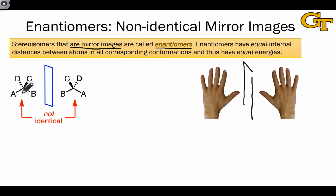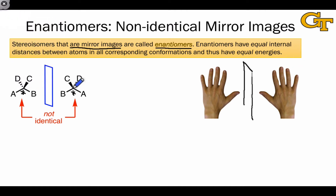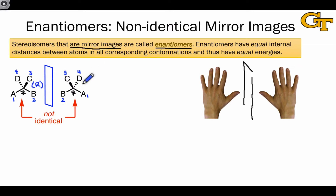Molecules that differ only with respect to the configuration of a single tetrahedral stereocenter, here represented as the central carbon, are also enantiomers. Reflection through the mirror interconverts the enantiomers and changes the configuration of this stereocenter. For example, if this lettering corresponds to the prioritization used to assign R and S, reflection has left C and D in the same place and exchanged the positions of A and B, thus converting the configuration from R in the left-hand molecule to S in the right-hand molecule. This illustrates the important point that reflection of a chiral molecule inverts or changes configuration at tetrahedral stereocenters.